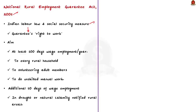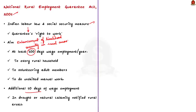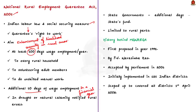MG NREGA provides at least 100 days of wage employment in a financial year to every household whose adult members volunteer to do unskilled manual work. There is also a provision for additional 50 days of unskilled wage employment in drought or national calamity-notified rural areas. Section 3 clause 4 of the act allows state governments to provide additional days beyond the guaranteed period, but this must be funded from the state government's own fund. This act is only applicable to rural areas and not urban areas.